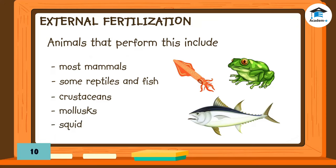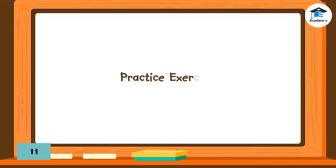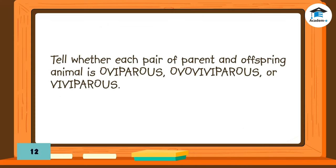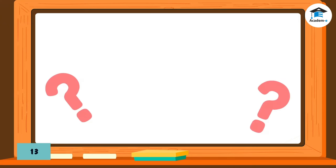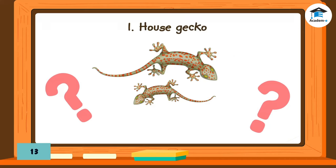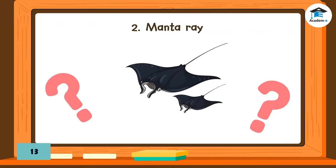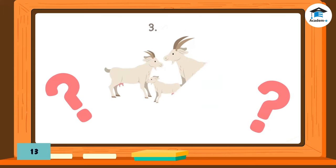Practice exercise: Tell whether each pair of parent and offspring animal is oviparous, ovoviviparous, or viviparous. Number one: house gecko — oviparous. Number two: manta ray — ovoviviparous. Number three: goat — viviparous.